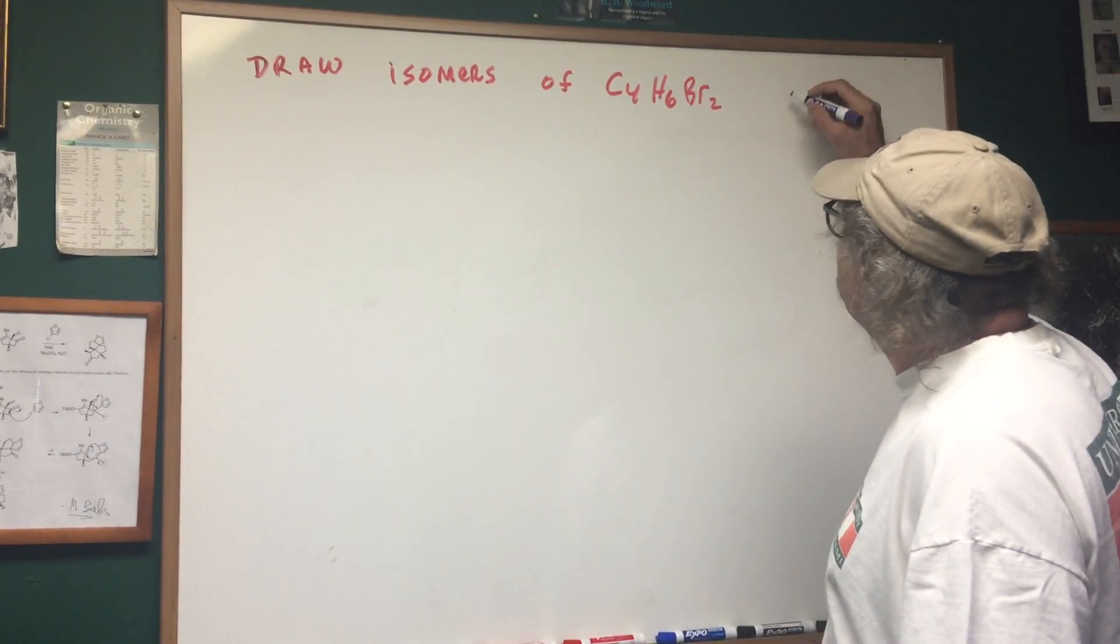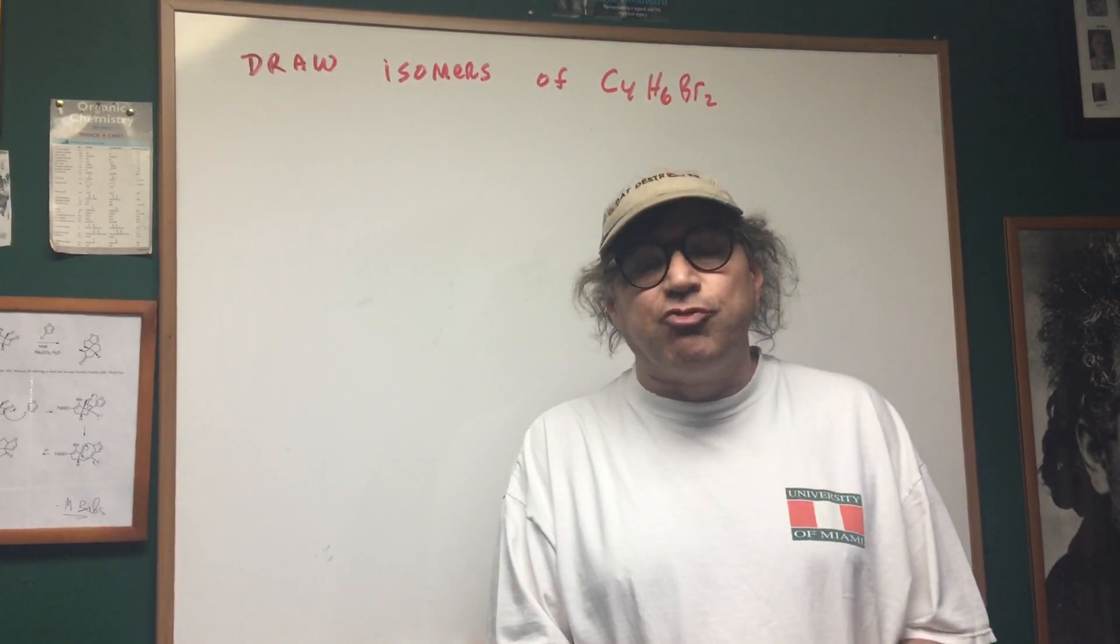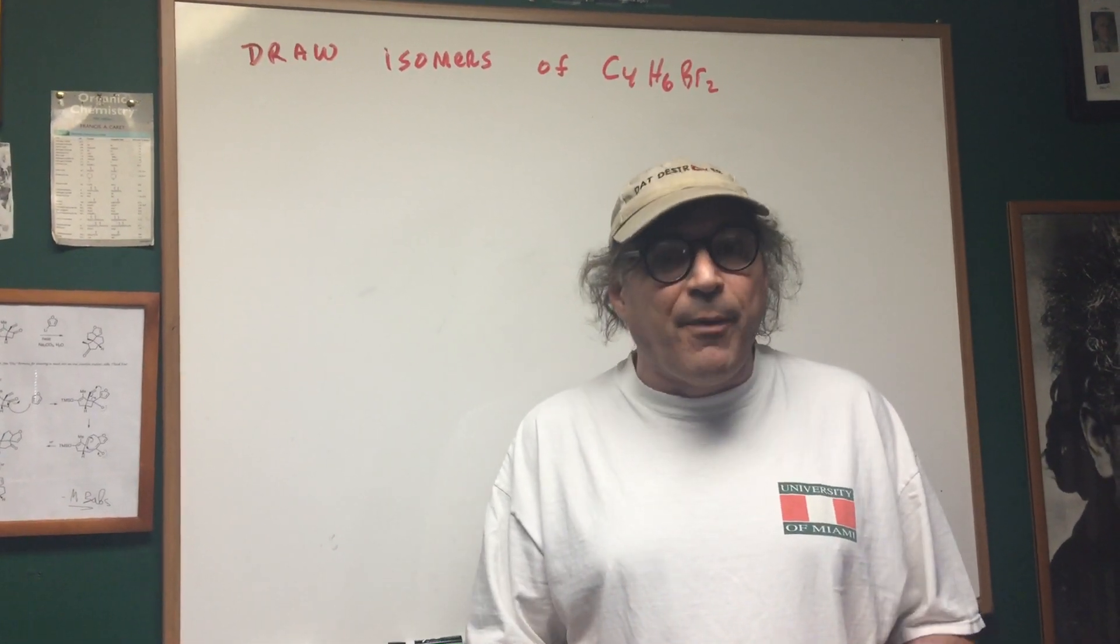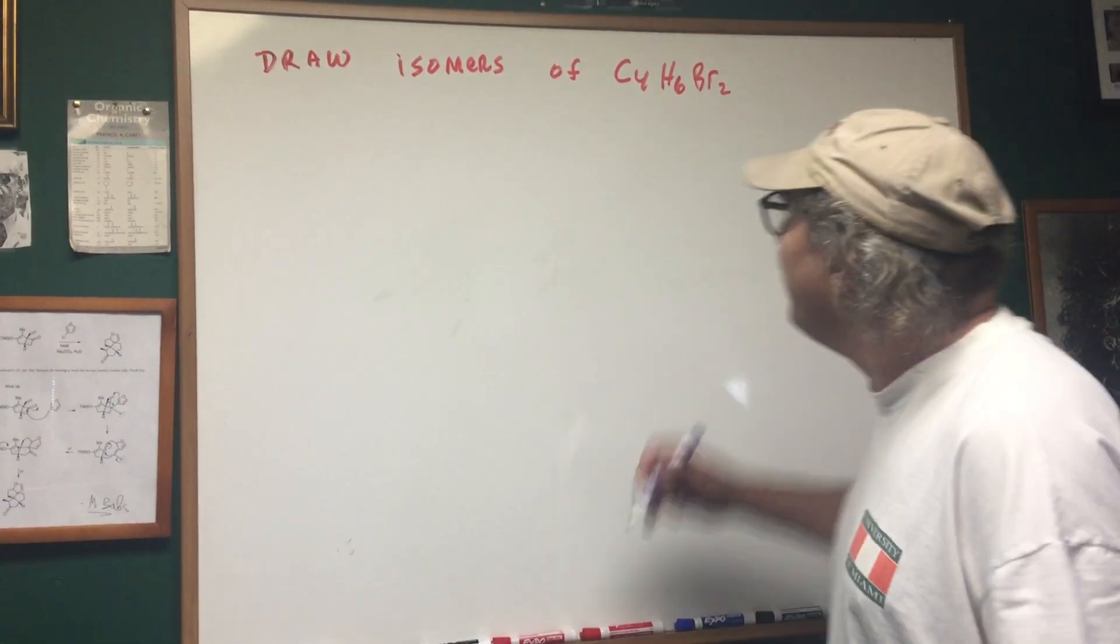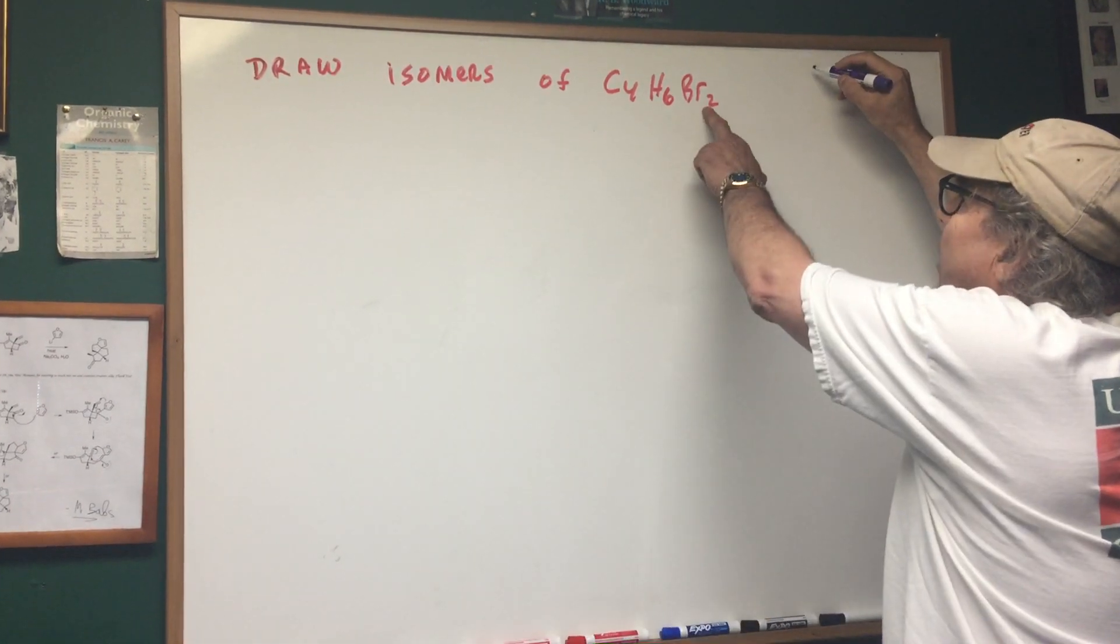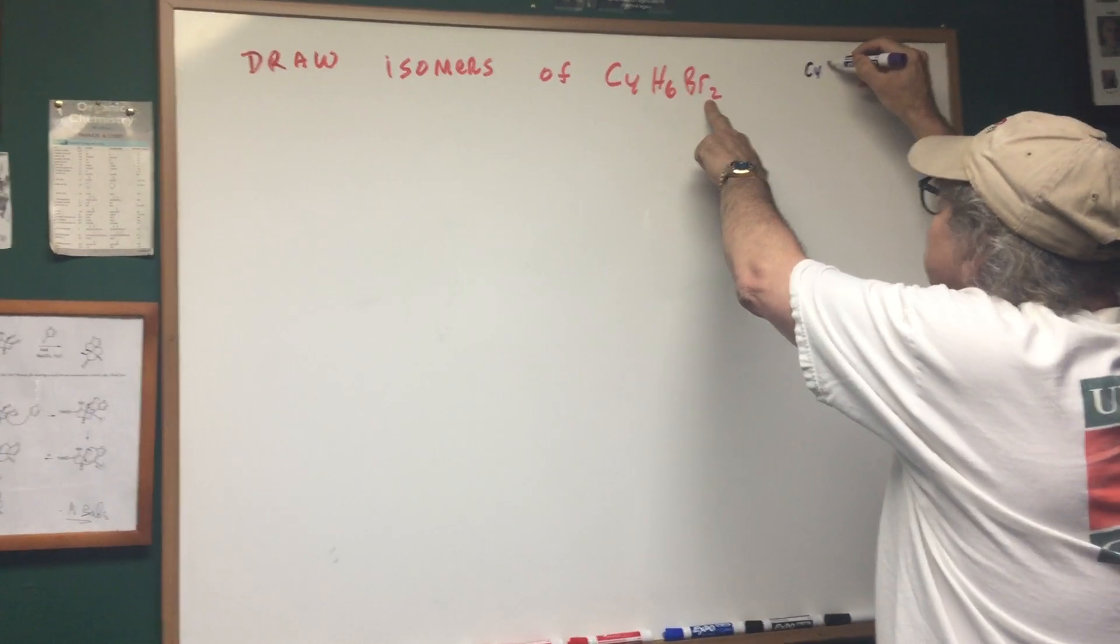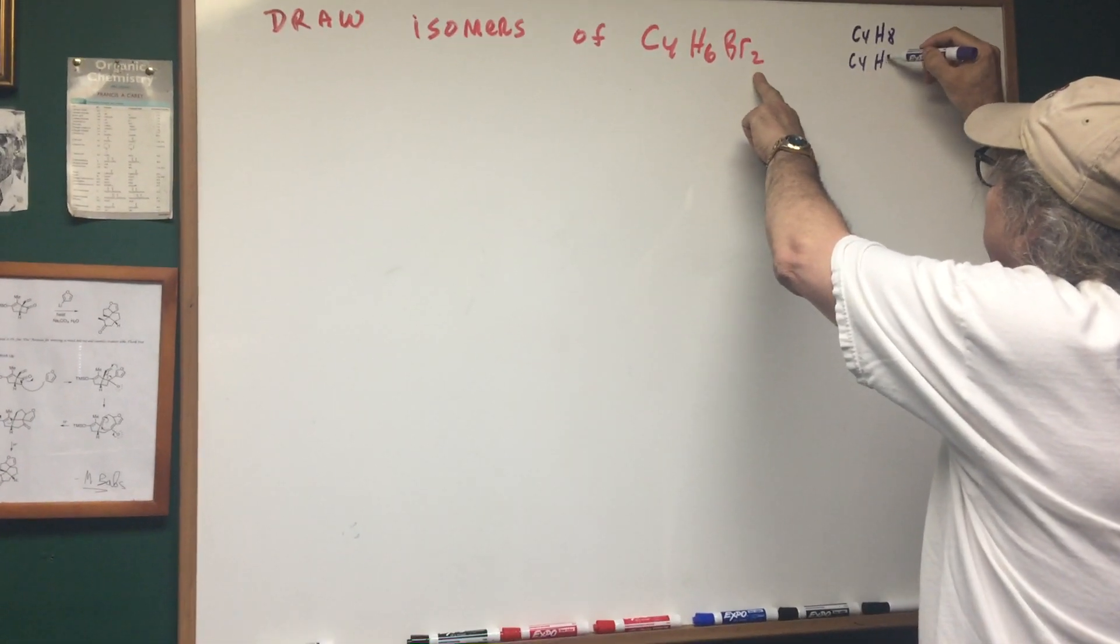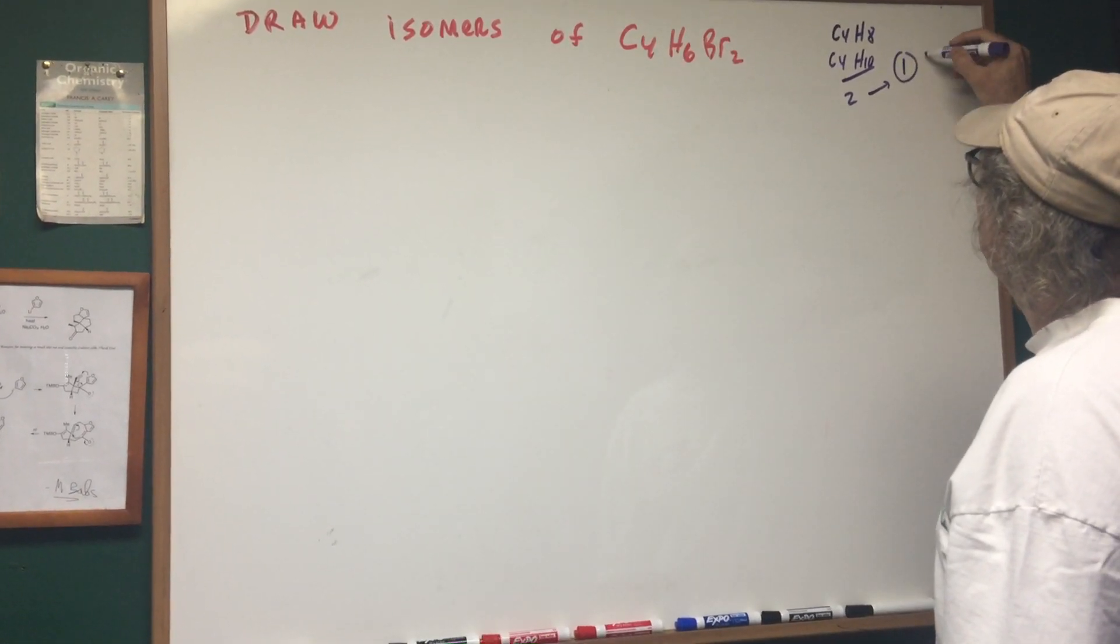The first thing I'm gonna go off to the side and I'm gonna take the degree of unsaturation. By doing that it'll tell me what is here, is there double bonds, singles, are there rings or triple bonds. So what we do, as I showed this in another video, you're gonna count a bromine or a halogen as if they were H's, so this gives me C4H8. Underneath it is the nearest alkane, you subtract, you cut it in half and there's one degree.